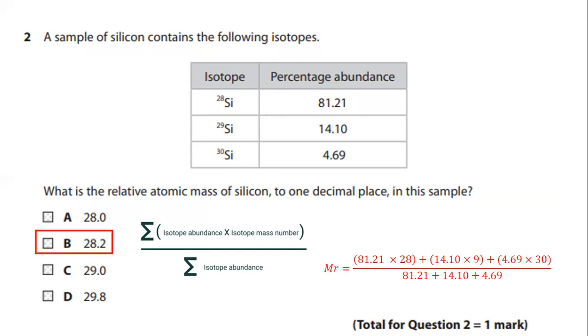Even without applying the values or going into the formula, you can get the answer. See the percentage abundances of these isotopes. Silicon 29 and silicon 30 makes less than 50% of this sample.